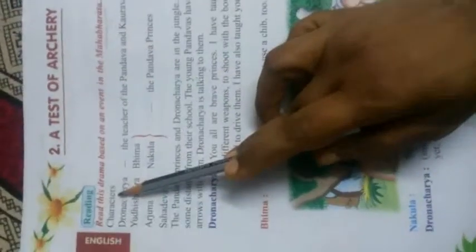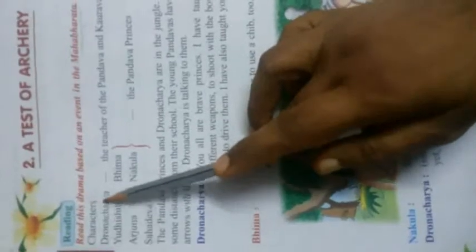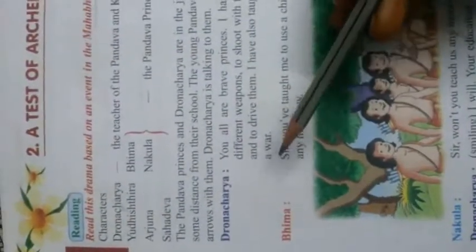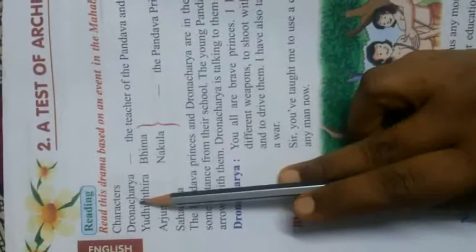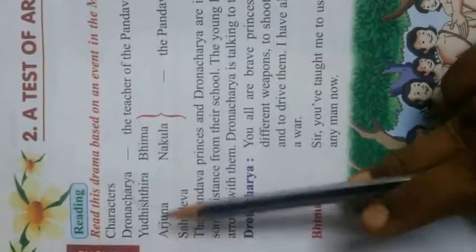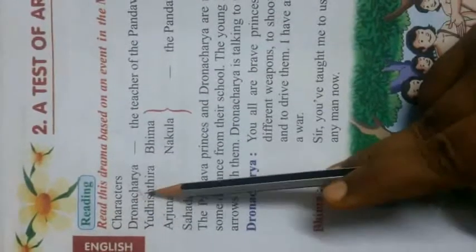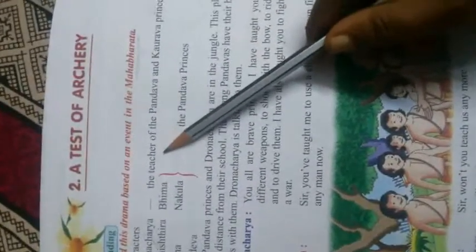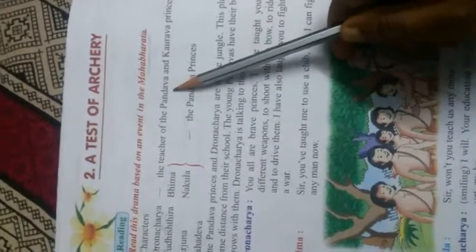Next, characters — what do you mean by characters? The names of the persons, or the persons who played roles, are called characters. Characters means the people who acted or played roles. Now we will see who the persons in this play are. This is a sort of a play. Dronacharya means a teacher of the Pandavas and Kauravas — he is their guru, their teacher who teaches them.